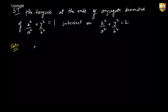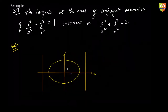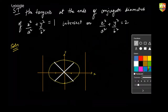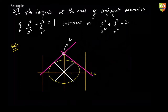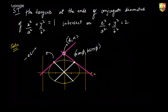This concept is quite easy. Let's say these are the two conjugate diameters, and you are planning to make tangents at the ends of these diameters. I have to find the locus of point (h, k). Let's say this point is (a·cosφ, b·sinφ), then the other conjugate point would be (−a·sinφ, b·cosφ).